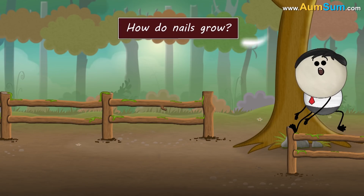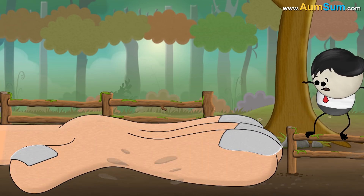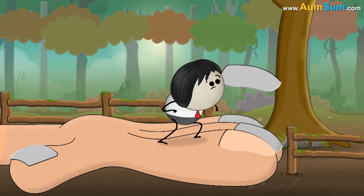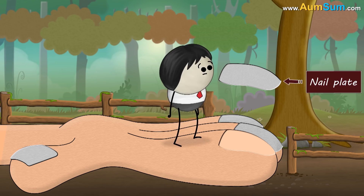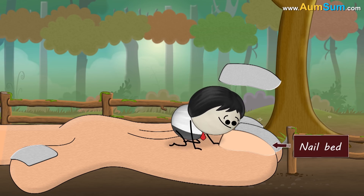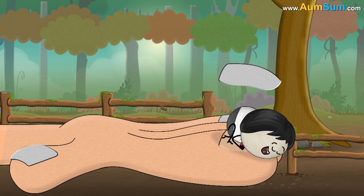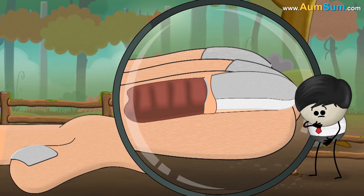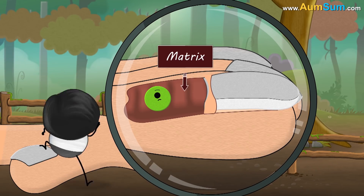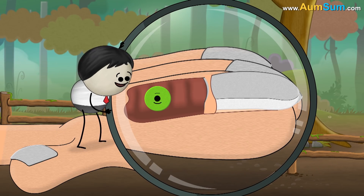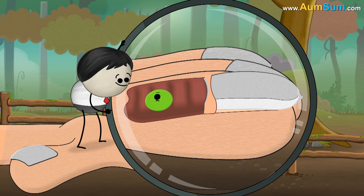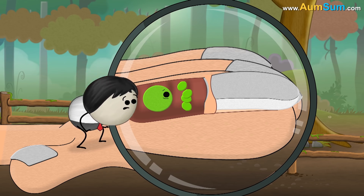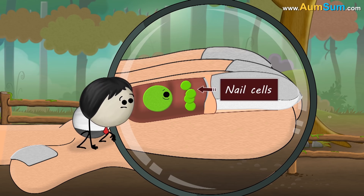How do nails grow? A nail consists of many different parts. The visible part of the nail is called the nail plate. The nail plate lies on the nail bed. Matrix is the area where nail growth originates, and it lies below the skin.